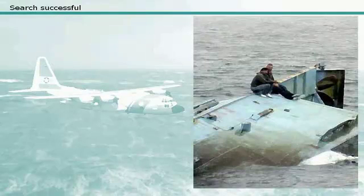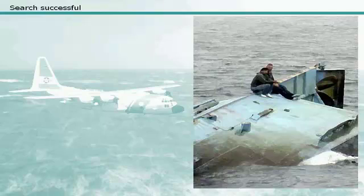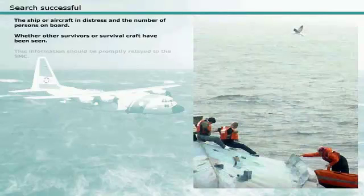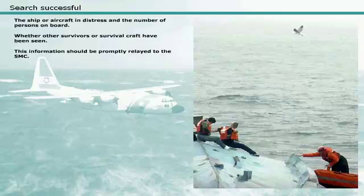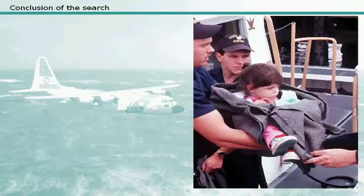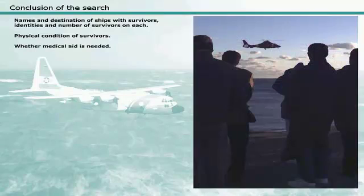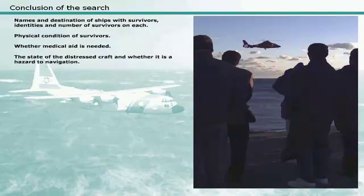Once the distressed craft or survivors have been sighted, the on-scene coordinator should assess the best method for rescue and direct the most suitably equipped craft to the scene, ensuring that all survivors are accounted for. Survivors should be questioned concerning the ship or aircraft in distress, the number of persons on board, and whether other survivors or survival craft have been seen. This information should be promptly relayed to the search and rescue mission coordinator, who should also be informed of the names and destinations of ships with survivors, identities and number of survivors on each, their physical condition, whether medical aid is needed, and the state of the distressed craft and whether it is a hazard to navigation.